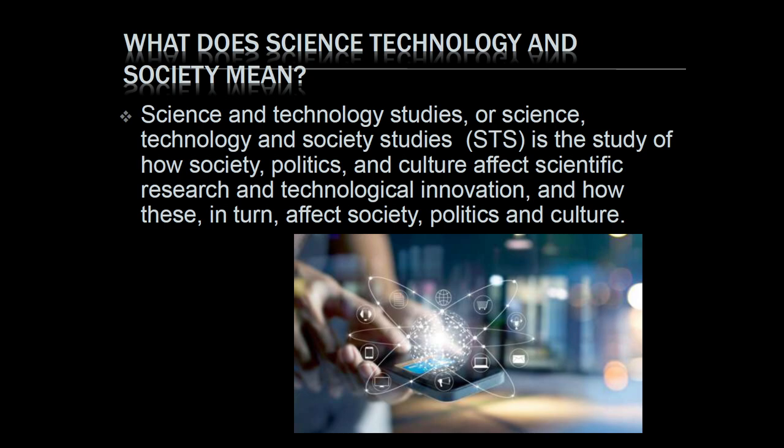Eventually, we are exposed to the side effects of science and technology, such as global warming and climate change. In our early days, these side effects were not published or perhaps not yet observable. For this reason, we want to study not just the good parts and successes, but also the failures of science and technology. That is why the government included Science Technology and Society as a subject.